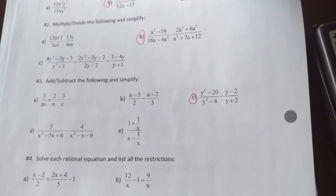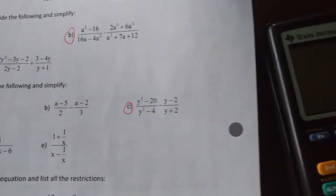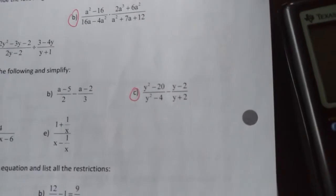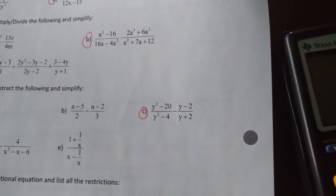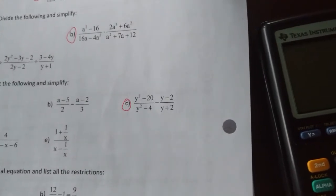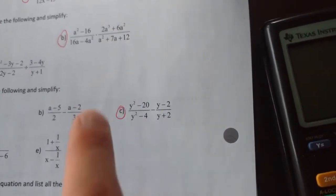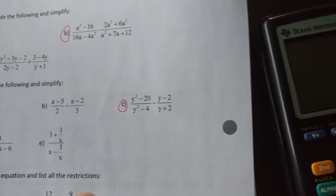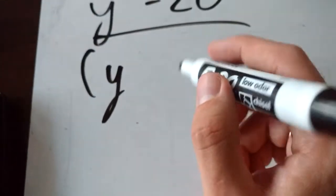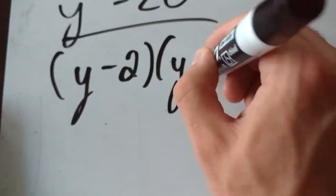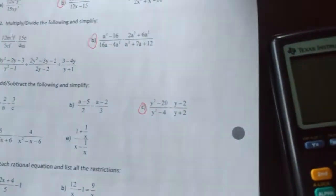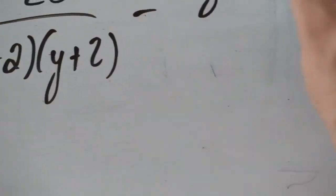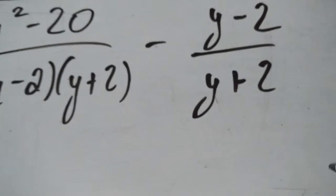Now I'm going to jump to question 3, part C. We're asked to subtract these two rational expressions. Remember, when you subtract any kind of fraction, you need to have the same denominator on both sides. First, let's factor: y squared minus 20 almost looks like a difference of squares but isn't, so we leave it alone. On the bottom, y squared minus 4 is a difference of squares: y minus 2 times y plus 2. We're subtracting (y minus 2) over (y plus 2).